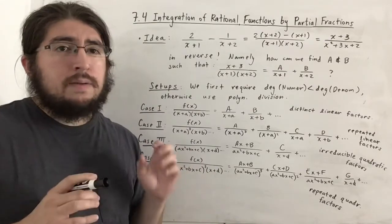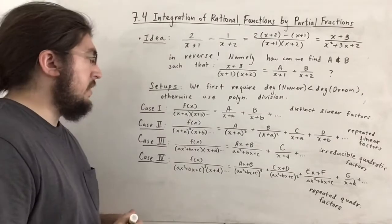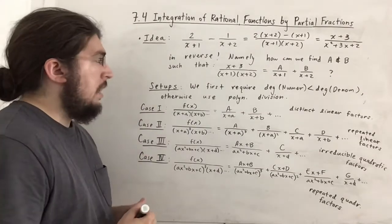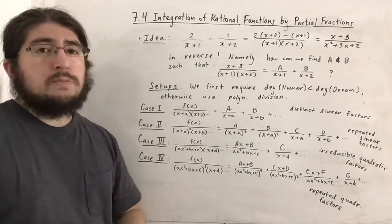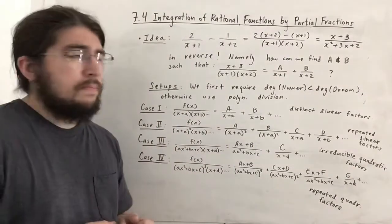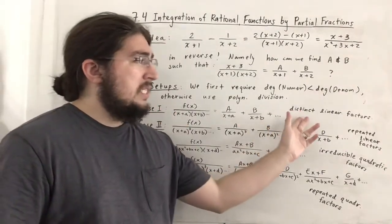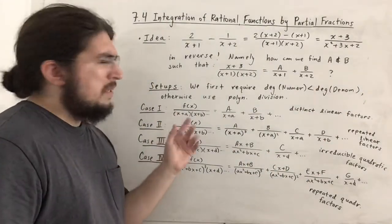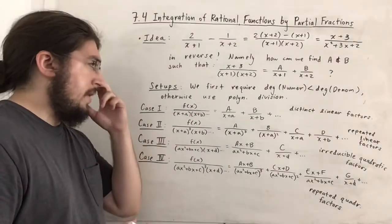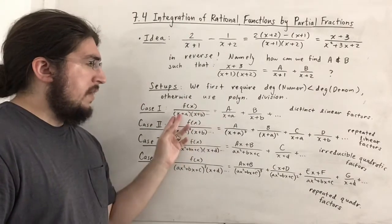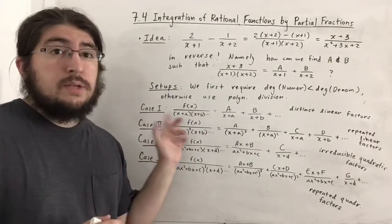That's one particular instance — one case. In fact, there are four cases. Before we begin the setups, we first require that the degree of the numerator must be smaller than the degree of the denominator; otherwise we use polynomial division. The first case involves distinct linear factors, written as x plus a, x plus b — though they could have coefficients like 3x plus 2. The setup is A over one factor plus B over the next, and so on.